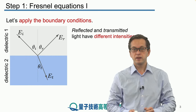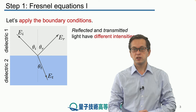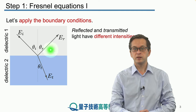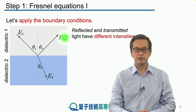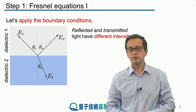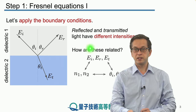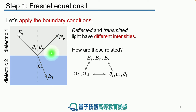Our main question is how are Ei, Er, and Et connected? We know from observation that not all of the intensity or all of the radiation is reflected, and not all is transmitted into dielectric medium 2. We would like to have some quantitative expression for how these quantities depend on the refractive indices n1 and n2 and on all of the angles theta i, theta r, and theta t. That's precisely the job of the Fresnel equations, which have very important application when electromagnetic waves travel from one dielectric into a different one.